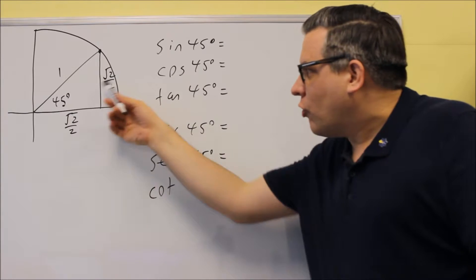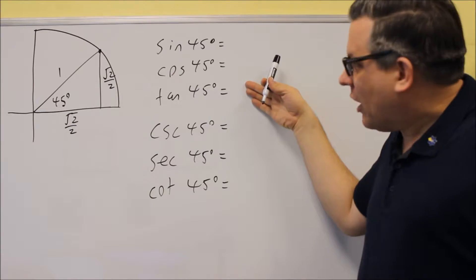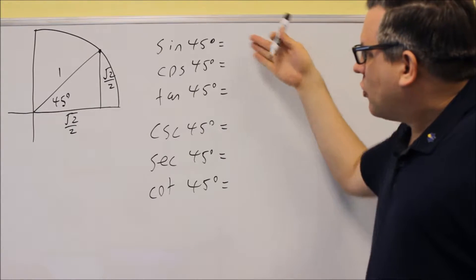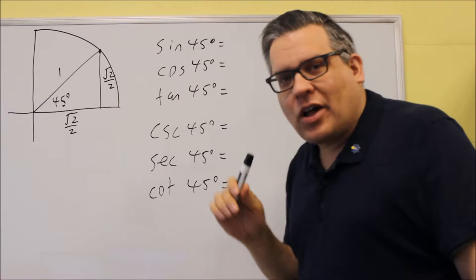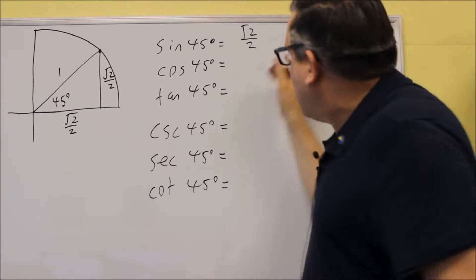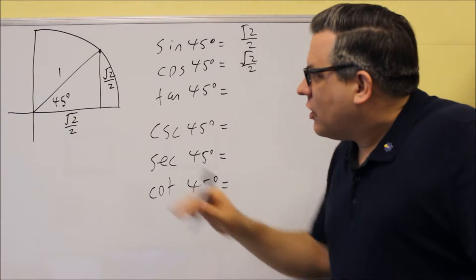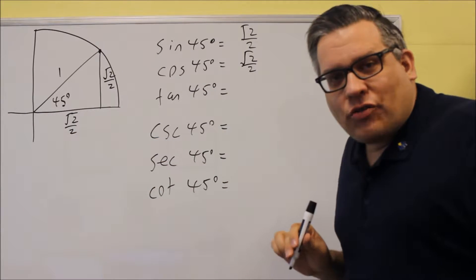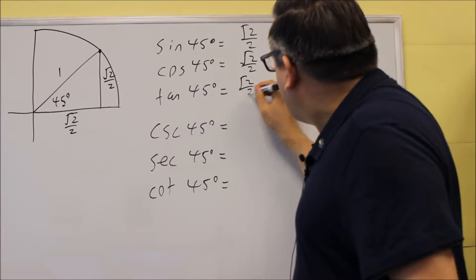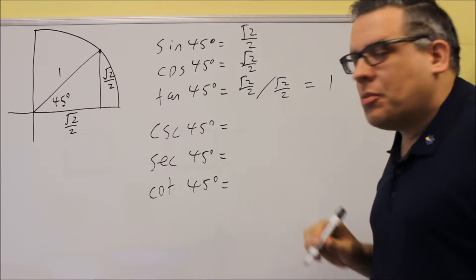You get square root of 2 over 2 for both sides. So sine 45, referring to the y value at 45 degrees, would be square root of 2 over 2. Cosine 45 would be exactly the same — square root of 2 over 2 — coming directly from the x value. Tangent 45 would be the y value over the x value, which is root 2 over 2 divided by root 2 over 2, giving us 1.